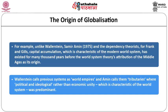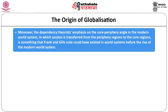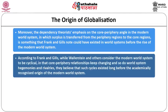Wallerstein calls previous systems 'world empires' and Samir Amin calls them 'tributaries,' where political and ideological rather than economic unity was predominant. The dependency theorists emphasize the core-periphery angle, in which surplus is transferred from peripheral regions to the core. Frank and Gill believed that such cycles existed long before they were academically recognized by scholars.